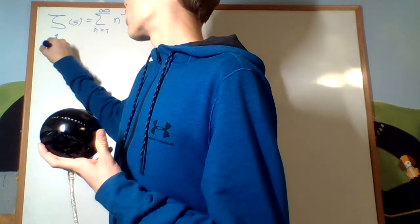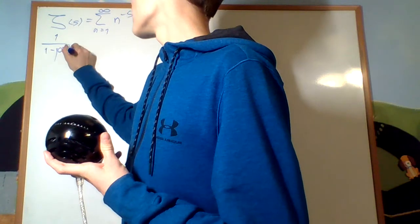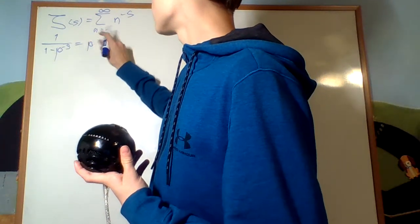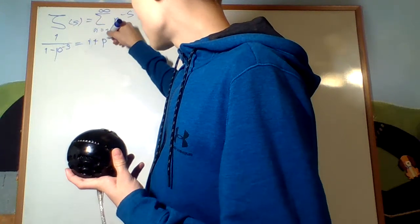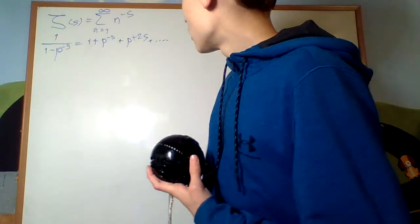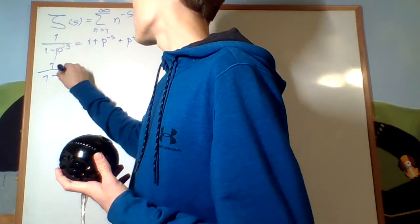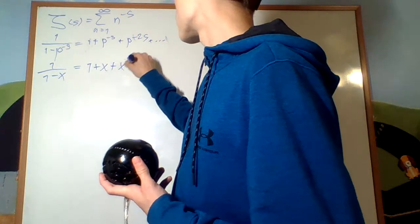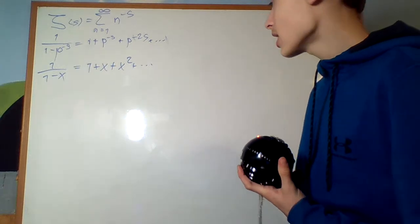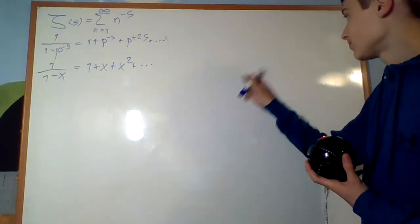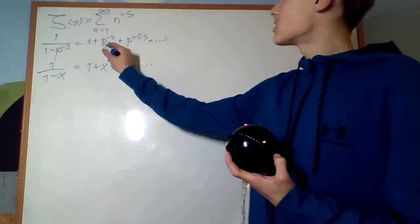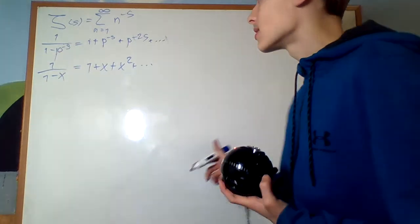We know that 1 over 1 minus p to the negative s is going to be equal to 1 plus p to the negative s to the power of 1, plus p to the negative s to the power of 2, and so on. By the formula that 1 over 1 minus x equals 1 plus x plus x squared plus and so on. This is true for any prime and any s bigger than 1.